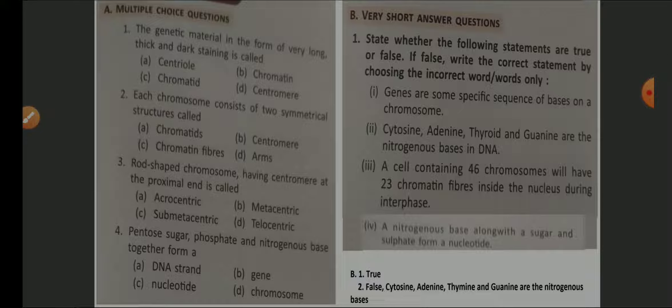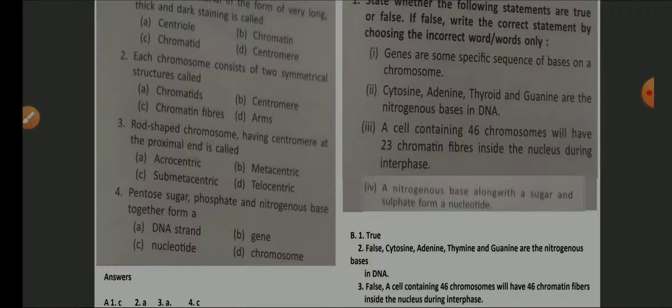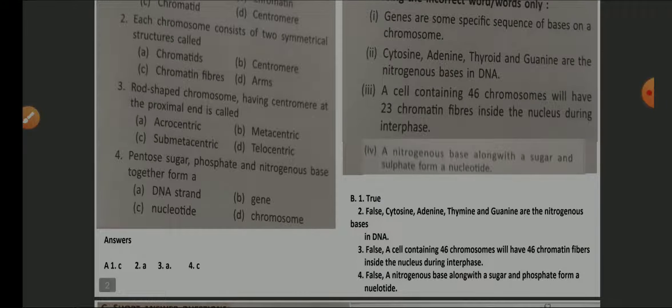Moving to Part B — very short question answers, true and false. If false, replace the incorrect word and rewrite the statement. Genes are the specific sequence of bases on the chromosome — this is true. Cytosine, adenine, thyroid, and guanine are the nitrogen bases in DNA — the answer is false; replace 'thyroid' with 'thymine'.